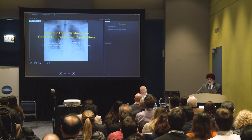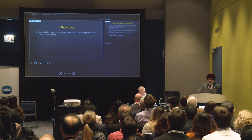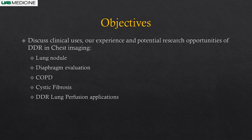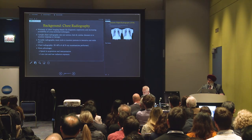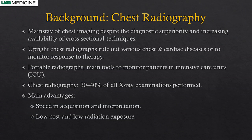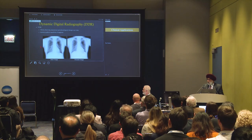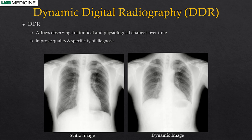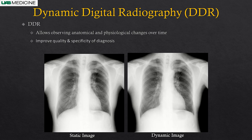Thank you, John. I'm going to review what we have learned from DDR and look at the current literature. The objective is to share our experience and potential research opportunities with DDR. Chest radiography is the mainstay of chest imaging for any chest or cardiac symptoms—constituting 30 to 40% of all x-ray exams performed. Its main advantages are speed in acquisition and interpretation, low cost, and low radiation dose. With DDR, we get not only anatomic information but also physiologic information of the lung parenchyma, diaphragm, perfusion, and ventilation.